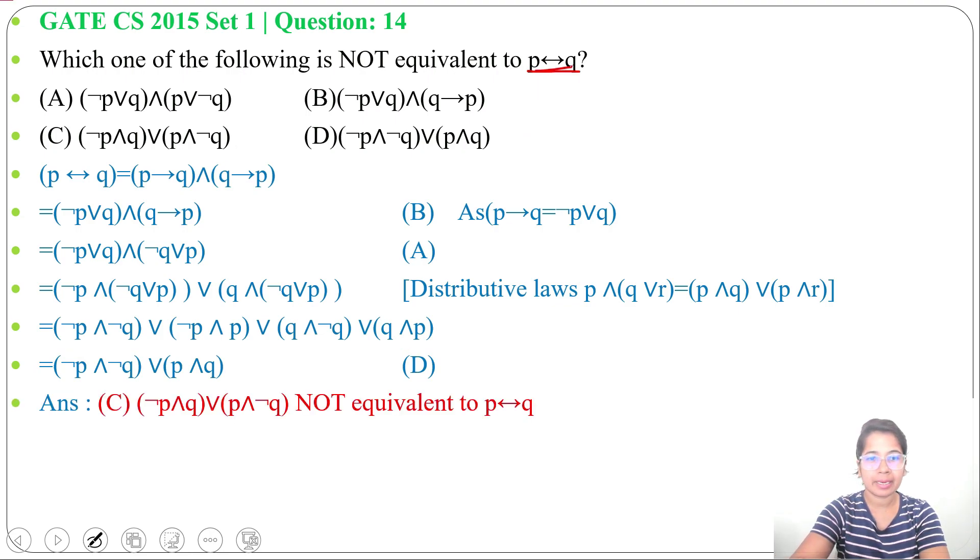I simplified this and I got every option like A, B, D, and I didn't get C, so C is the answer. Even you can simplify every option. I already discussed propositional logic, just go through the lecture. And if this lecture is helpful for you, please like, share, and subscribe. Thank you.